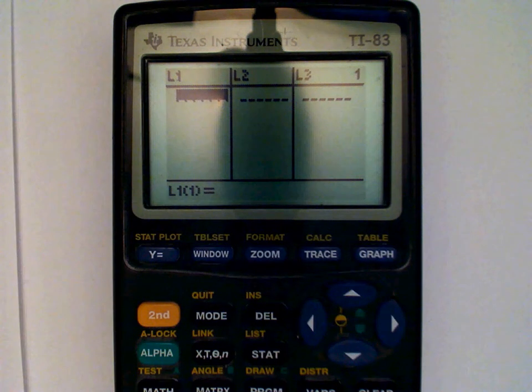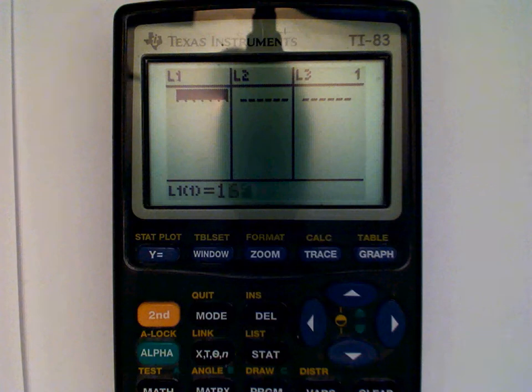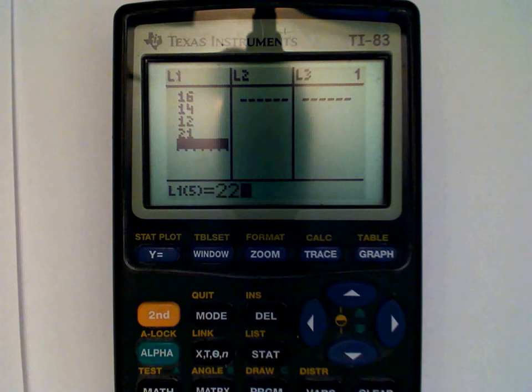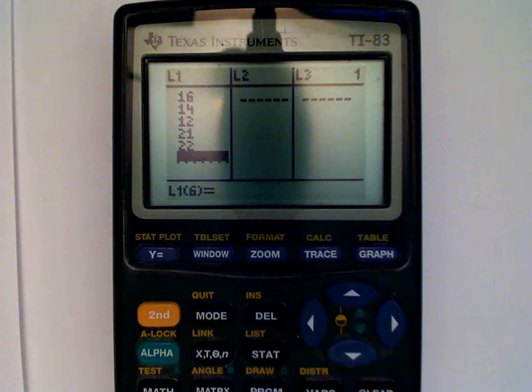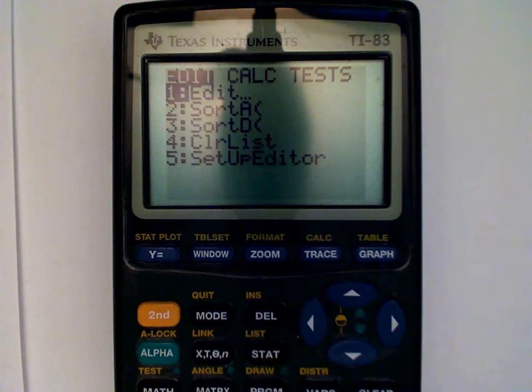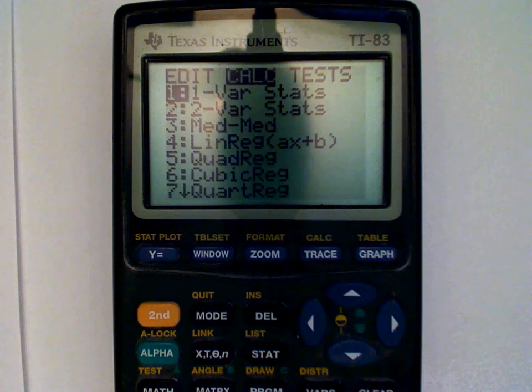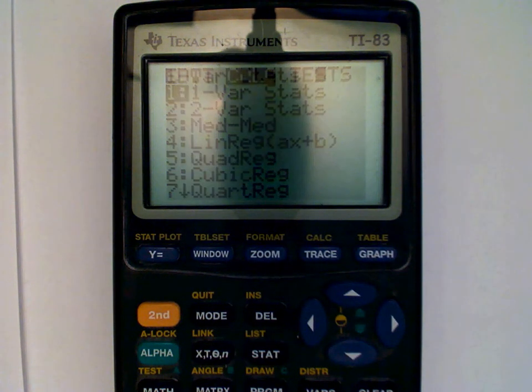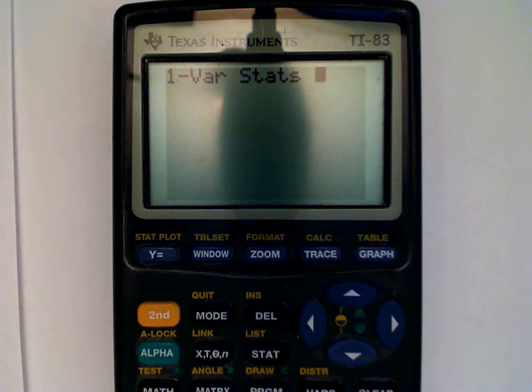So going back to the previous example, we have 16, 14, 12, 21, and 22. And then we go to stat, calc, and one variable stats. Just press enter.